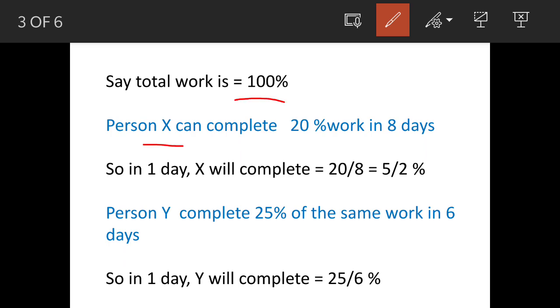X can complete 20% work in eight days, so in one day he'll complete 5/2%. And Y can complete 25% of the same work in six days, so in one day Y will complete 25/6% work.